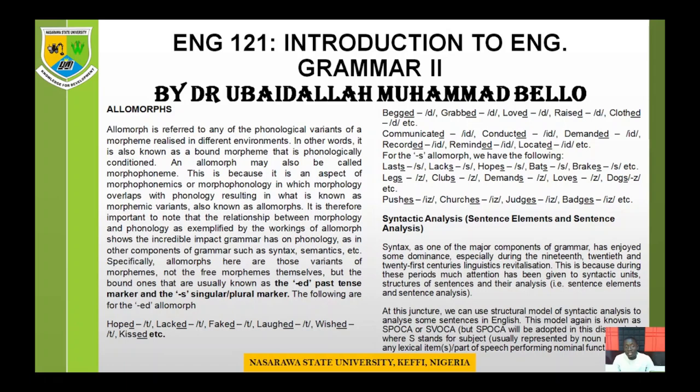An allomorph is referred to as any of the final logical variants of a morpheme realized in different environments. In other words, it is also known as a bound morpheme that is phonologically conditioned. To understand allomorphs, one has to first understand what a morpheme is. A morpheme is the smallest meaningful linguistic unit of a word, and morphemes are classified into two types: free morphemes and bound morphemes.